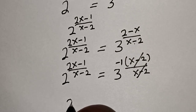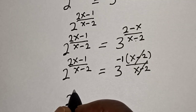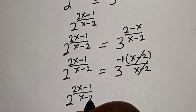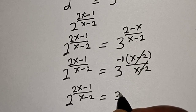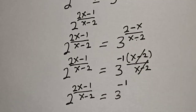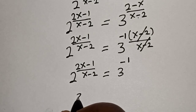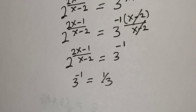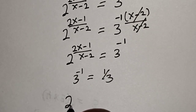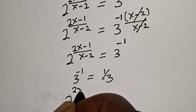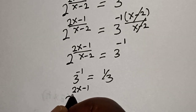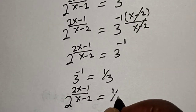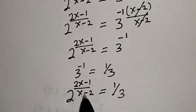We have 2 to the power of 2x minus 1 divided by x minus 2, is equal to 3 to the power of negative 1. And 3 raised to the power of negative 1 is equal to 1 over 3. So our final answer is 1 over 3.